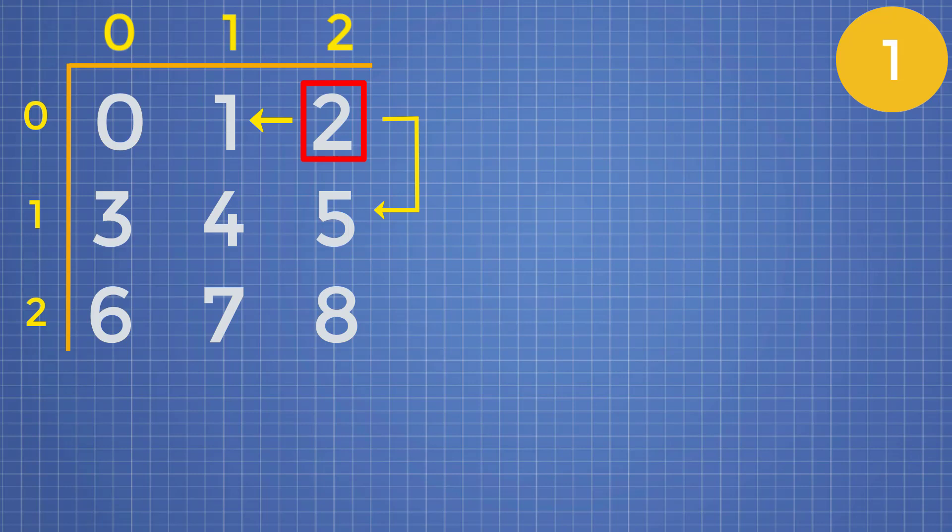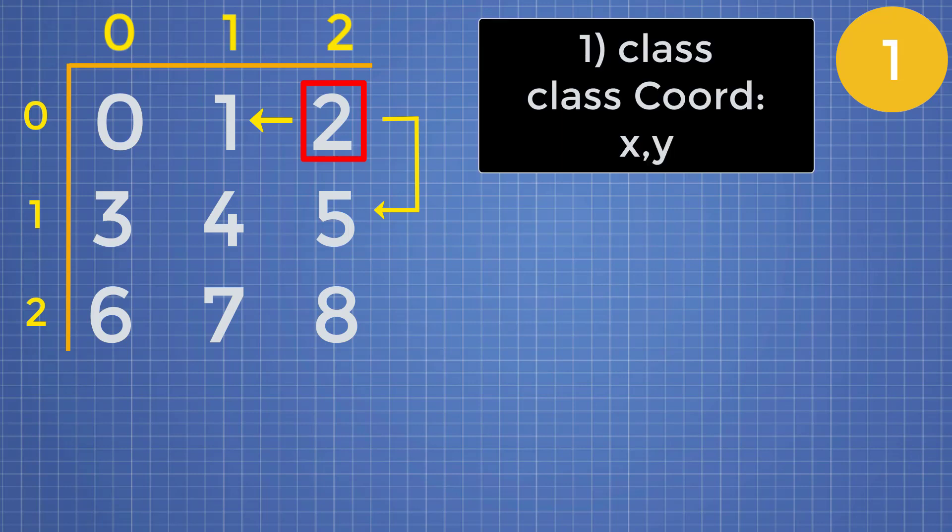So one of the first ways is to just use a class, right? We could say class coordinate, and then we'd have an x and y coordinate embedded inside of this class. Now this will obviously work, but now you have a lot more boilerplate code to write. And in an interview, you want to try to keep your code as concise as possible. So we can exclude this method.